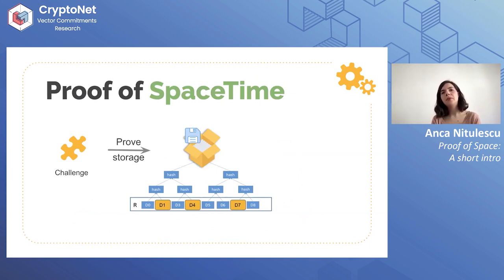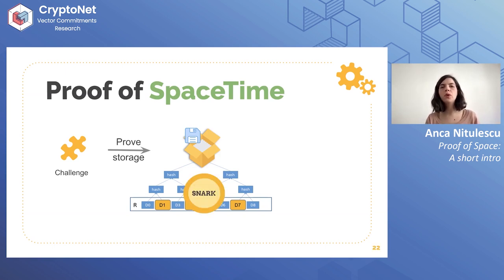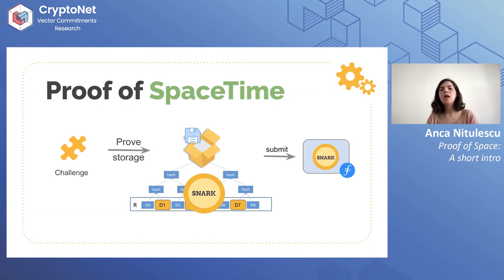For the proof of spacetime, we are asked challenges and have to open different positions in the replica. Opening many positions in a Merkle tree requires many proofs that are logarithmic in size. Since we want to avoid a very large proof, we put a SNARK on top of it — we aggregate many openings for Merkle trees into a SNARK and submit that SNARK to the chain.